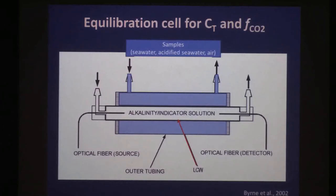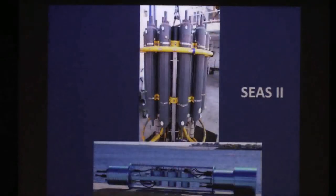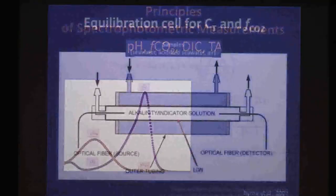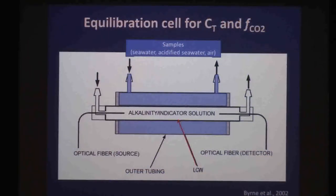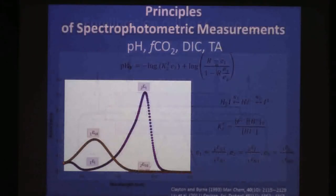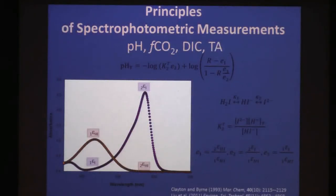This shows a schematic of exactly what I'm describing: fiber optics coming in and out of the system — one carrying light in, the other taking light to the spectrophotometer. This is the liquid core waveguide, this is our alkalinity indicator solution which we can replenish from time to time, and this is the outer solution — seawater that we acidify for determinations of dissolved inorganic carbon.